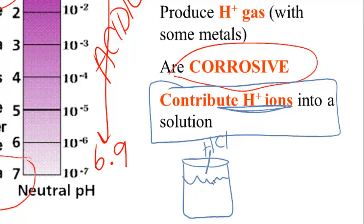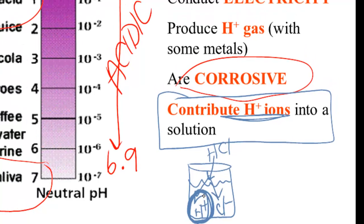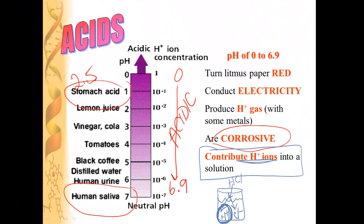So if you take some hydrochloric acid and you dump it into some water, as soon as the hydrochloric acid hits the water, it will separate into hydrogen ions and chlorine ions. Therefore, if you put an acid in water, it will release hydrogen ions into the solution.